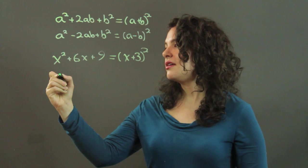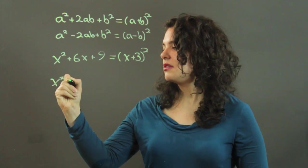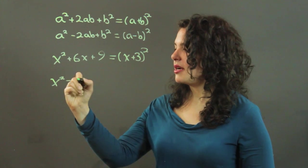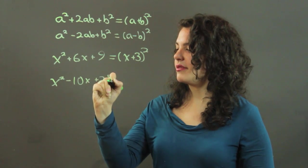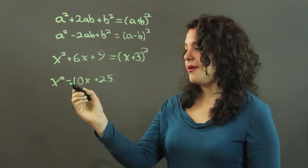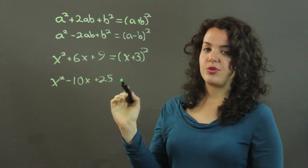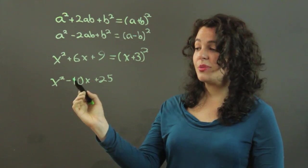Another example would be, let's say we had x squared minus 10x plus 25. Now, this is a perfect square, as is 25. Square root of 25 is 5. Do I have 2 times 5 times x here? I do, but it's negative.